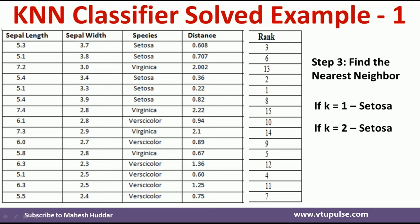Let's take one more example. If the value of k is equal to 5, we need to identify the first five examples with ranks 1 to 5. Rank 1 is setosa, rank 2 is setosa, rank 3 is setosa, rank 4 is versicolor, and rank 5 is virginica. So out of 5 neighbors, 3 are setosa, 1 is versicolor, and 1 is virginica. Since 3 out of 5 are setosa, the new example again belongs to setosa.